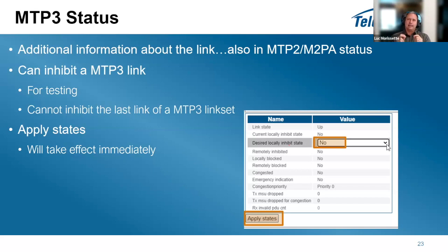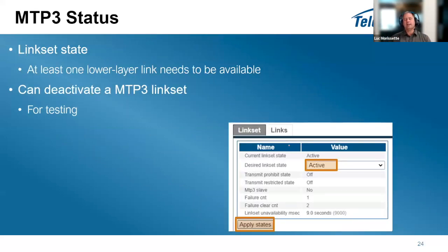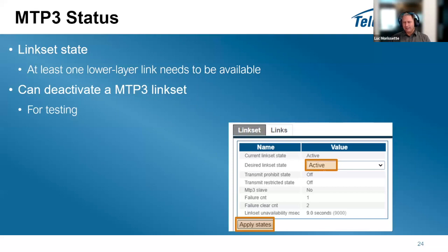The link set status shows active if at least one lower-layer link is available, allowing traffic to continue through that link. You can also deactivate a link set to test that traffic correctly routes through alternative paths, for example when you have multiple routes going to multiple STPs. The default mode for a link set is active.